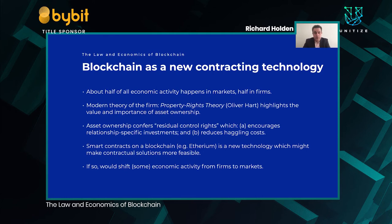What asset ownership does under property rights theory is give the owner of those assets residual rights of control, which encourages investment that's relationship-specific and reduces haggling costs. For property rights theorists and for the modern understanding of the boundary of the firm, this determines the boundary of the firm — it's about the relative incentives provided for asset-specific investments or reducing ex post frictions like haggling that come from allocating the asset to different owners.